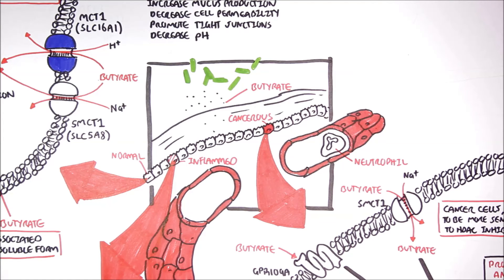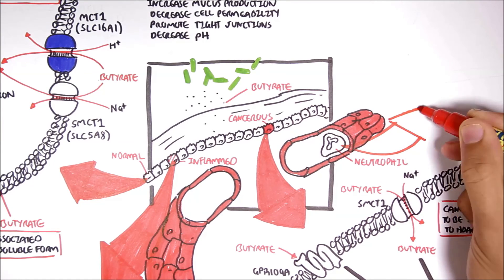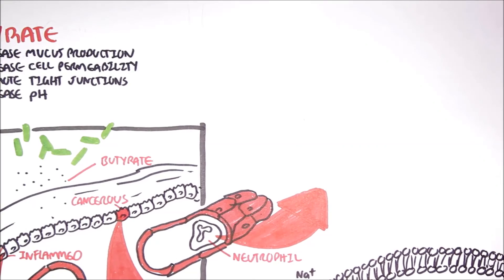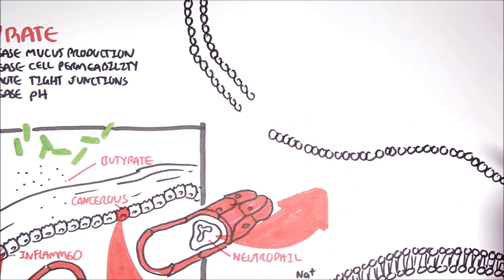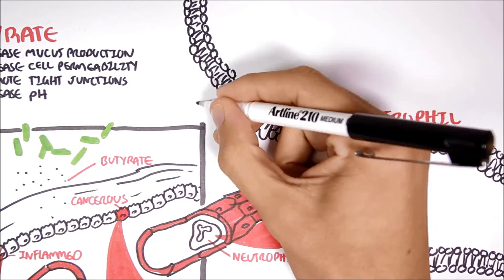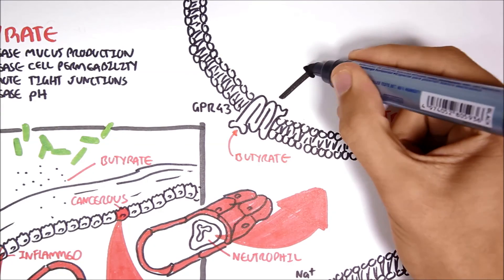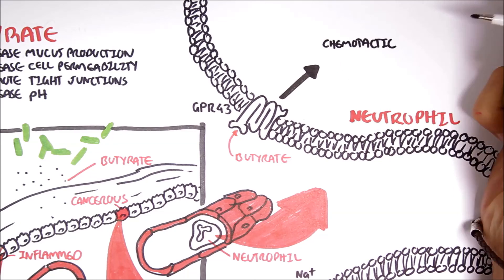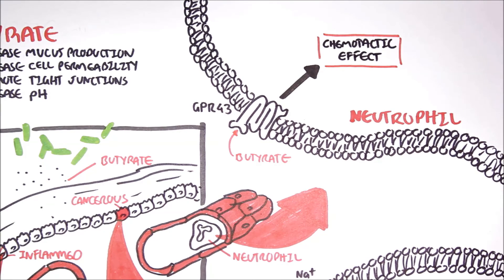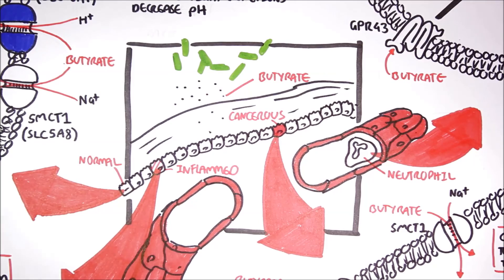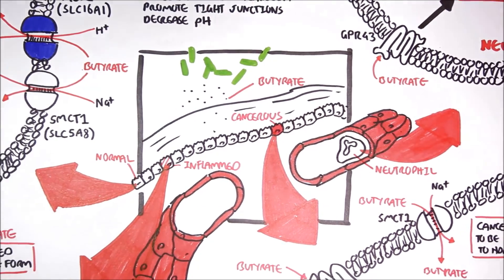Finally, butyrate can affect the immune system in many ways, but for now we will concentrate on the effects butyrate have on neutrophils. Now, butyrate can act on the G-protein receptor 43 and 41 on immune cells. By activating G-protein receptor 43, butyrate has shown to have chemotactic properties, allowing more neutrophils to be recruited to the area of interest. By recruiting more immune cells to the area, for example, the neutrophils are able to remove unwanted substances or bacteria from the mucosal system.